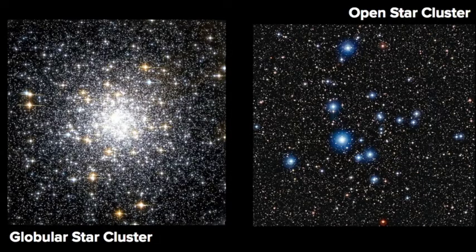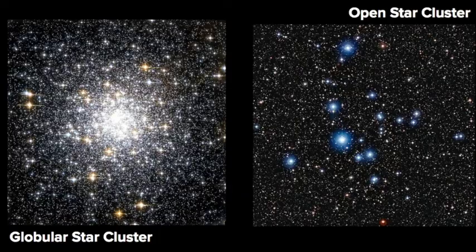To recap: globular clusters are ball-shaped groups of stars that are very old — in the order of billions of years. They are larger in diameter, contain first-generation stars that evolved into red giants and supergiants, and they live within the halo of our galaxy. Open star clusters do not have a definitive shape, they are younger, they contain second-generation stars which are often hot and blue, and they live within the disk of our galaxy.